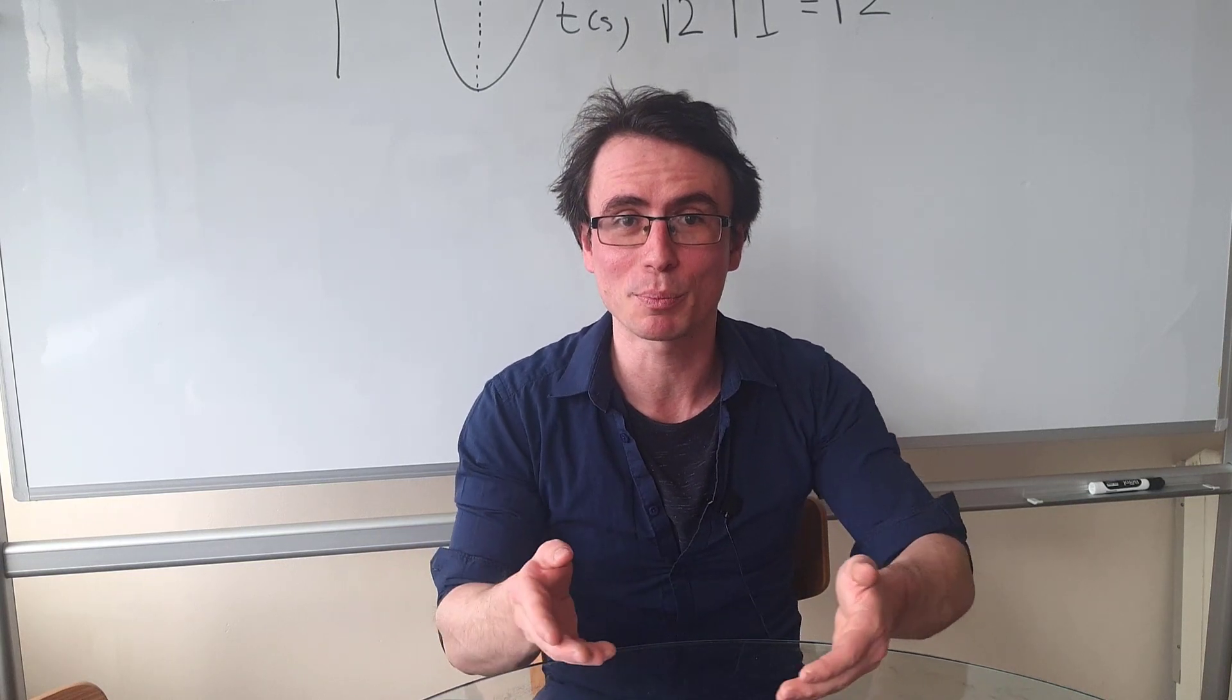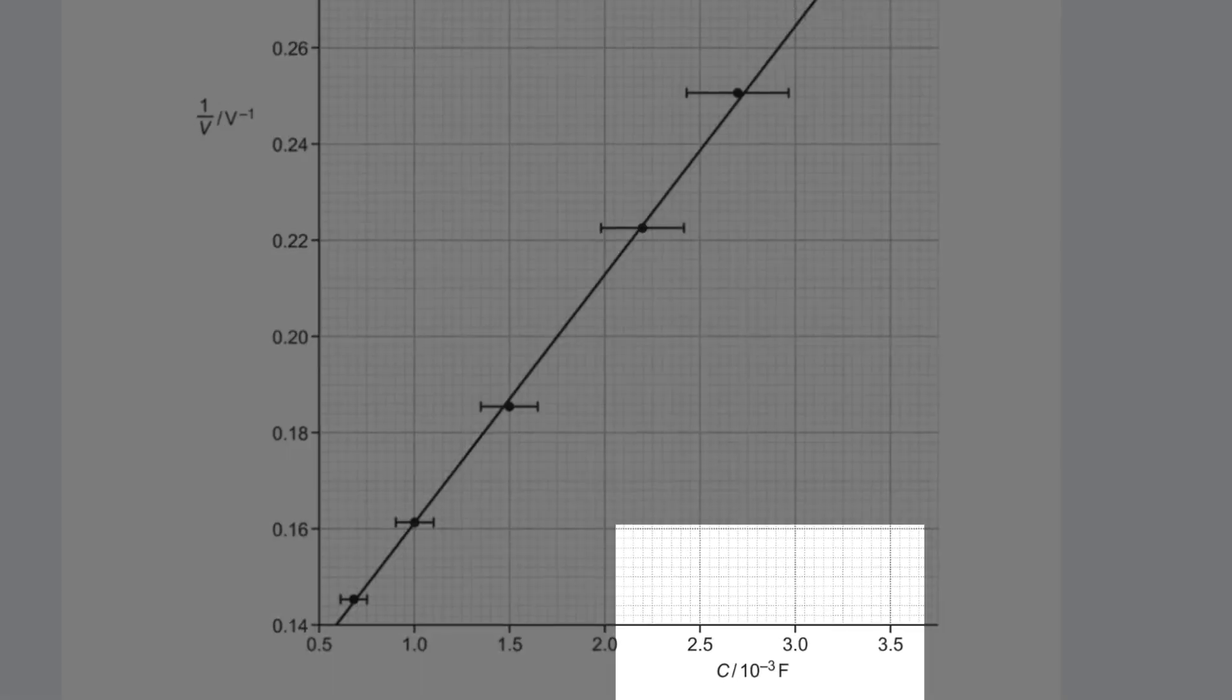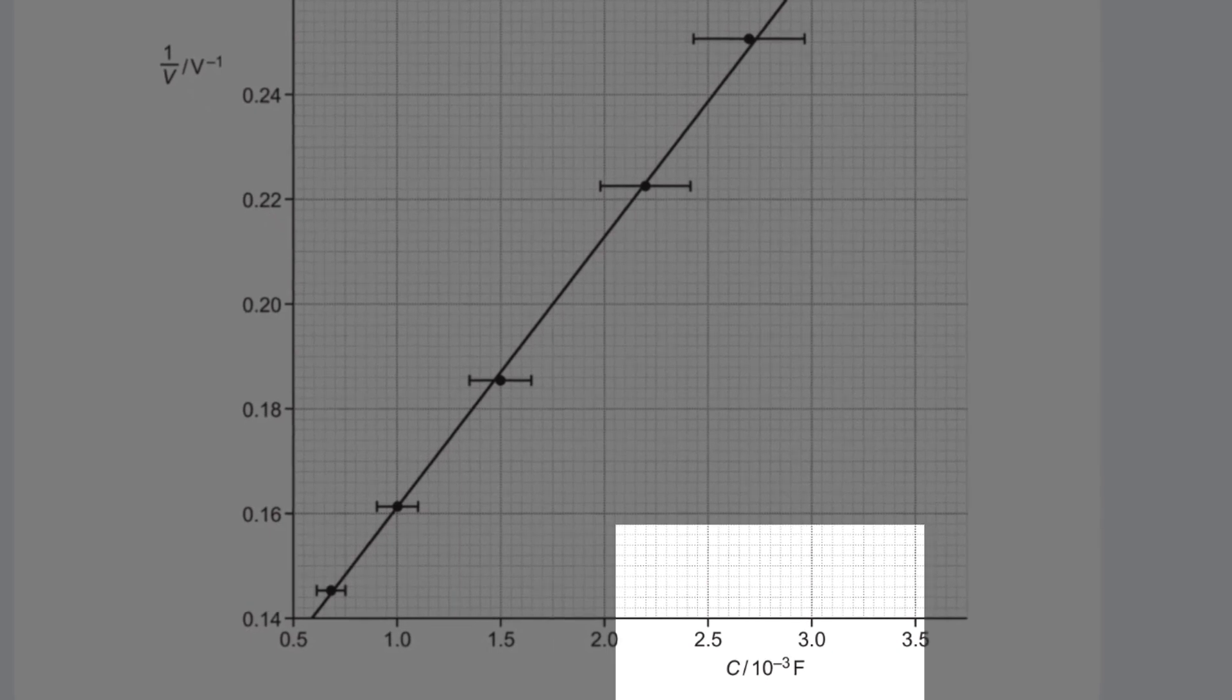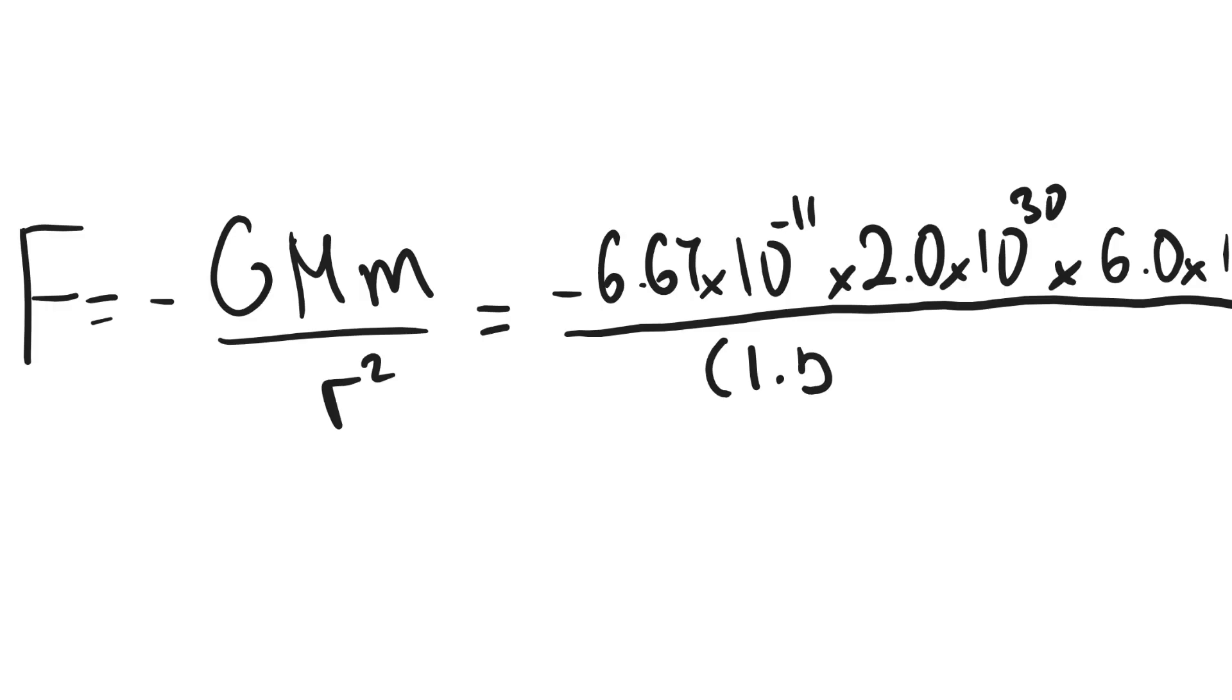For instance, many students might miss a prefix in the axes of a graph leading to a calculation error later on. Quite a few might do a mistake while inputting some values into the calculator, for instance, forgetting the square in the universal law of gravitation.